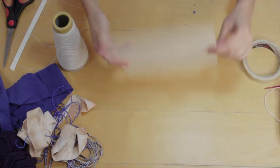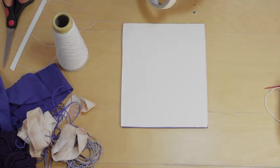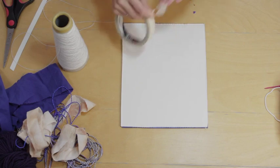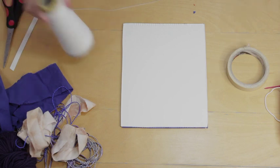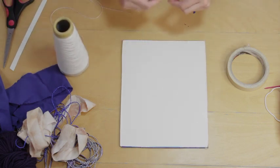So we're going to start by turning our loom over to the back, and you're going to need your masking tape for this. I'm going to take the end of my warp thread and I'm going to start at this corner here.